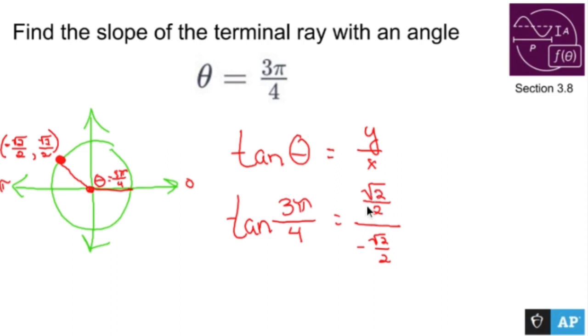Well, root 2 over 2 over root 2 over 2 is 1. So root 2 over 2 over its negative self is negative 1.